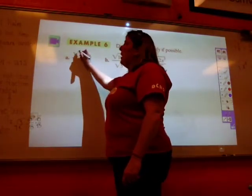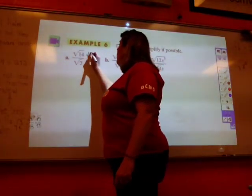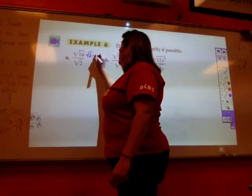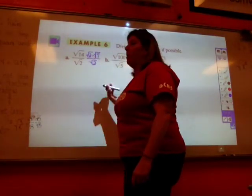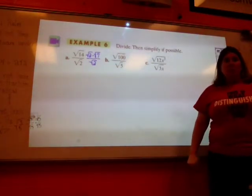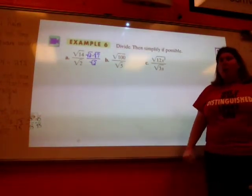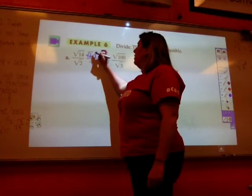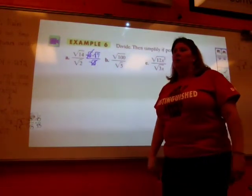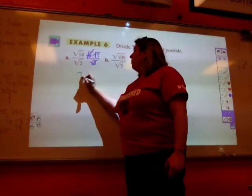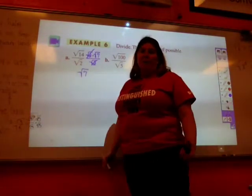And what would that become? It would become the square root of 2 times the square root of 7 all over the square root of 2. Does everybody agree with that? And then guess what happens to my square root of 2? They cancel one another out, and then I get what? The square root of 7.